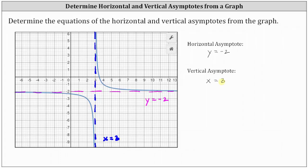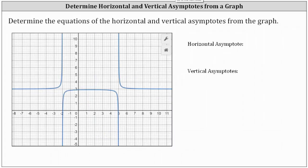Let's take a look at a second example. Let's begin by sketching the horizontal asymptote as well as the two vertical asymptotes. This horizontal line is a horizontal asymptote — notice how the graph approaches it to the right and to the left. The equation of this horizontal line is y equals three. Notice how the graph approaches this first vertical line as the graph goes up and down; the equation of this vertical asymptote is x equals negative two.